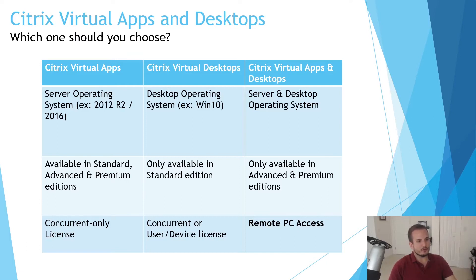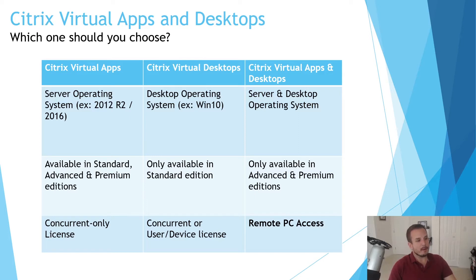Next, Citrix Virtual Desktops is for virtualizing a desktop operating system — think Windows 7 or Windows 10 — that users will be connecting to. It's a one-to-one desktop, meaning once a user is connected, that's their desktop until they log off. So if you have 100 users, you need 100 desktops at minimum, whereas with a server desktop using Citrix Virtual Apps you might get 10 or 20 users onto a single server desktop because it's multi-user aware.